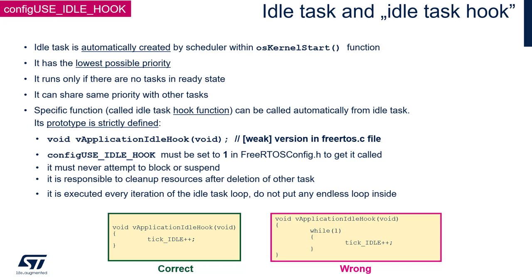Where might we need the idle task hook? It is usually used during the development phase to check whether the idle task is ever executed and, if so, to estimate how often it runs versus the other tasks. It is typically not used in the final application — this hook is for development purposes only.